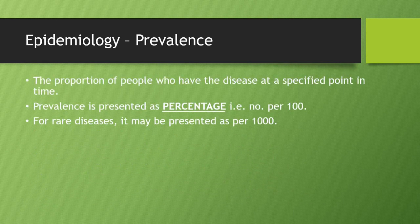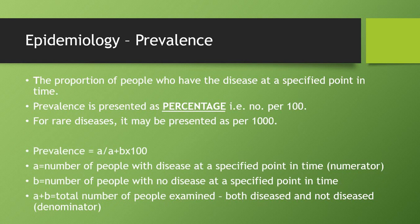Prevalence is defined as the proportion of people who have the disease at a specified point in time. It is always presented as a percentage, i.e., per 100. Some rare diseases can be represented as per 1000, but mostly it is presented as percentage. The formula for prevalence is: A divided by (A plus B), multiplied by 100. A is the number of people with disease at a specified point in time (the numerator). B is the number of people with no disease at that same time. A plus B is the total number of people examined (the denominator).